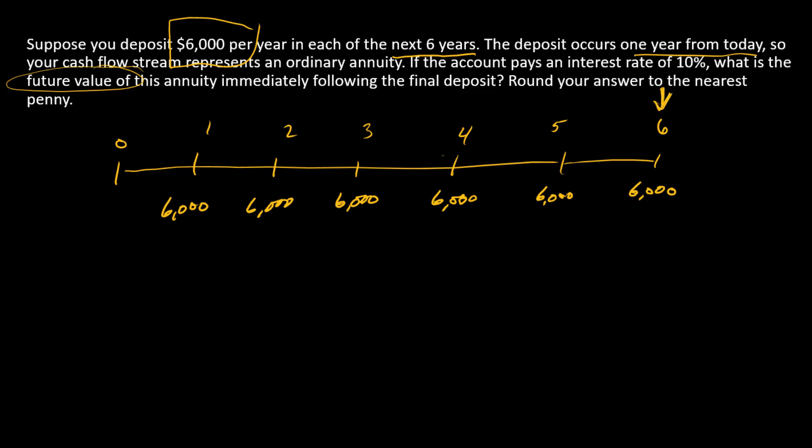We're being asked for the future value of the annuity here in time six, so we want FV at time six. The way I like to think about the future value of an annuity is something that we would calculate in two steps. Our first step would be to calculate the present value of the annuity.